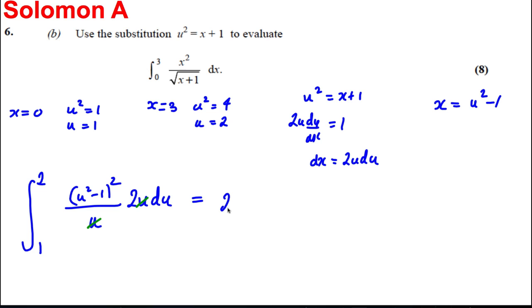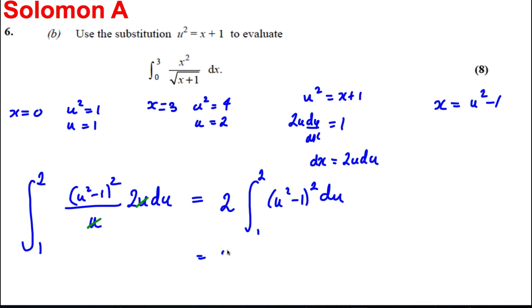Taking the 2 outside: this is 2 times the integral from 1 to 2 of (u²-1)² du. Expanding the bracket gives 2 times the integral from 1 to 2 of u⁴ - 2u² + 1, all with respect to u.